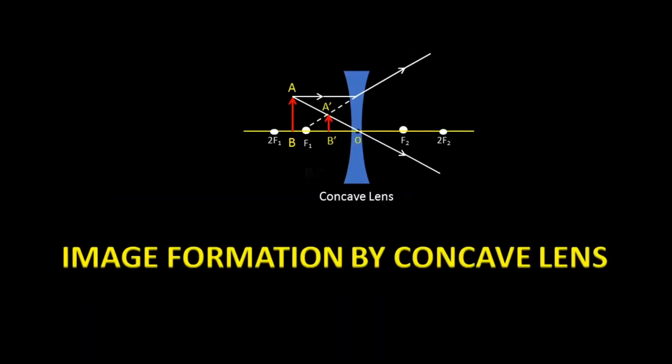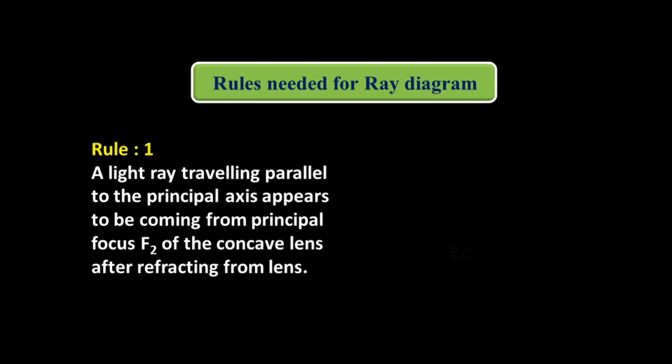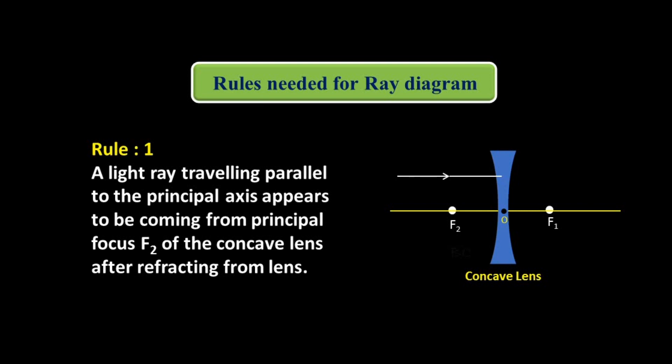Image formation by concave lens — some rules have to be followed for the construction of the ray diagram. Rule number 1: a light ray traveling parallel to the principal axis appears to be coming from the principal focus F2 of the concave lens after refracting from the lens. The incident ray parallel to the principal axis diverges away after refraction, but appears to be coming from focus F2.